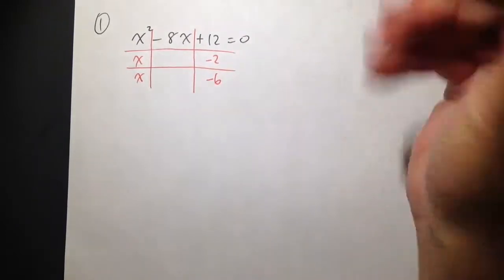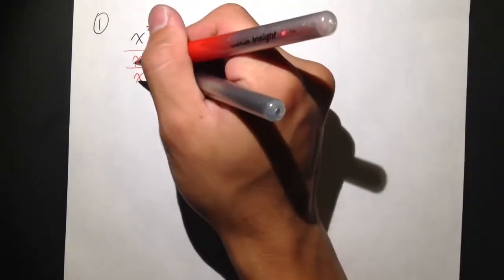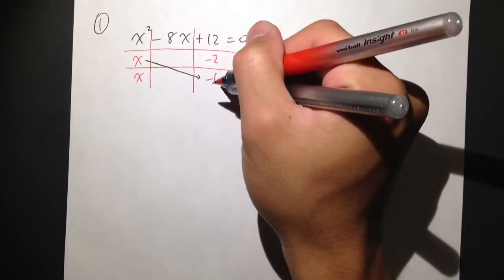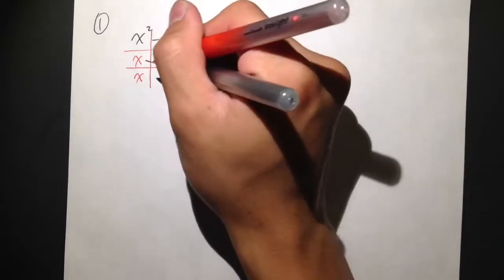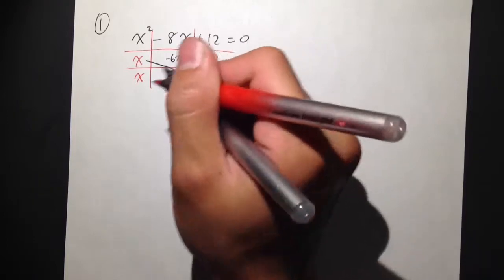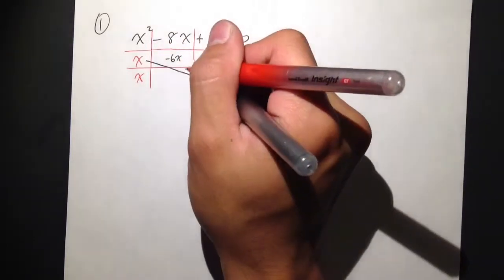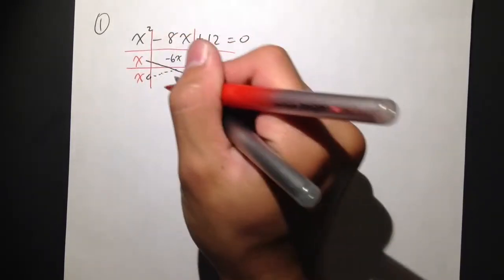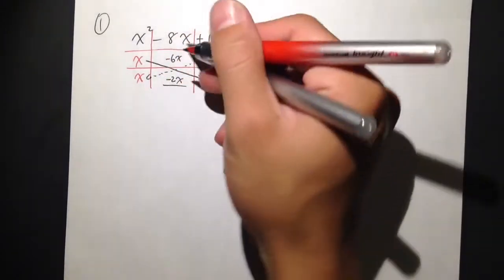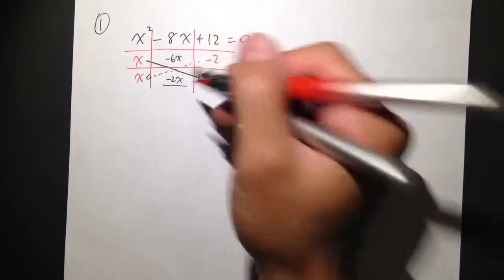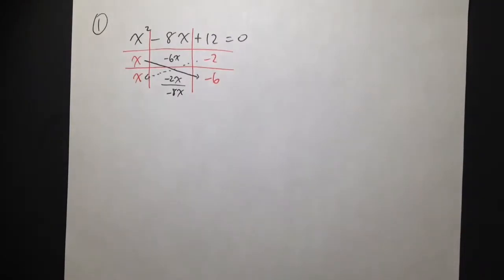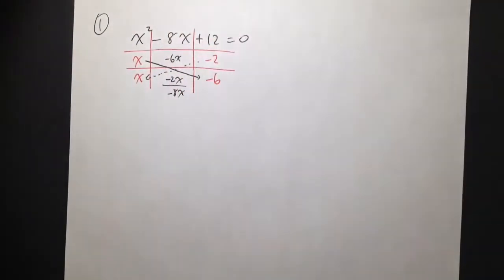To check if this works, we take the x here and multiply with negative 6, we get negative 6x. And then we also do negative 2 times x, we end up with negative 2x. Combining negative 6x and negative 2x, we get negative 8x, which matches our middle term.